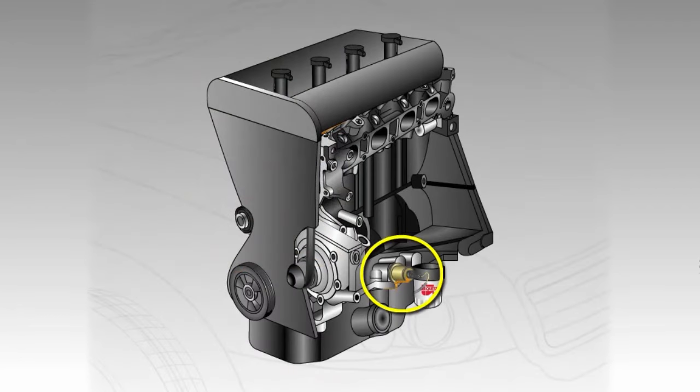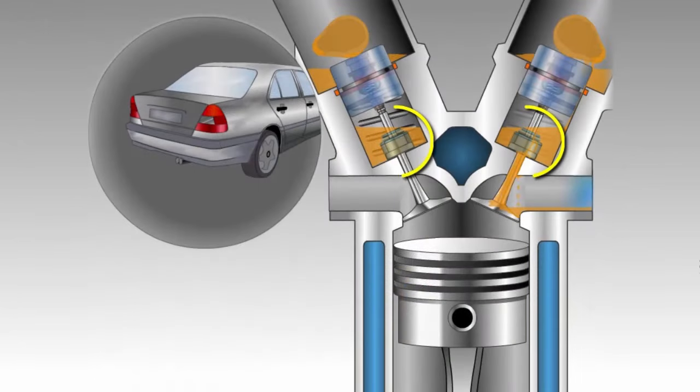Oil pressure sending units also commonly leak oil and are usually found on the side or front of the engine.